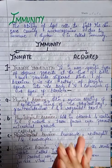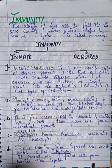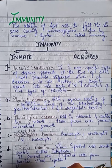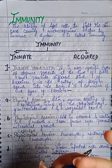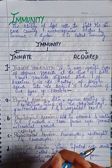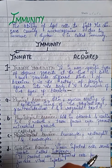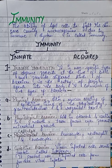Hello friends, welcome back to my YouTube channel Biologic Kingdom. Nowadays we are doing chapter Human Health and Diseases. In the last video, part one of this chapter, we discussed common diseases in humans, their causal organisms, symptoms and effects. Today we will do immunity.